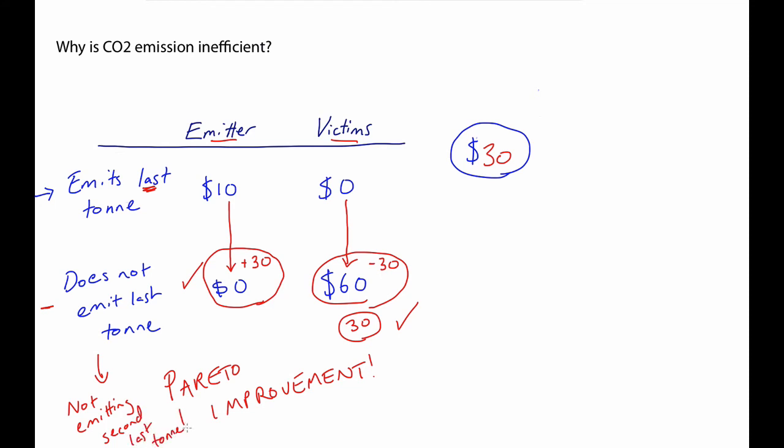How much benefit does the emitter get from that? How much benefit would the victims get from our not emitting that last tonne? And could that be the subject of favourable trade? And by repeating this over and over, you might well find that the vast majority of our carbon emissions are inefficient. Exactly how far the argument goes is something that's got to be subject to further economic analysis. But it certainly is not an argument that's restricted to simply one tonne.